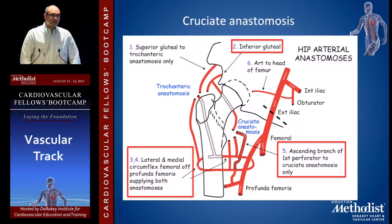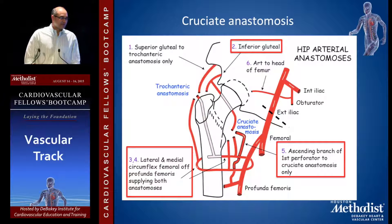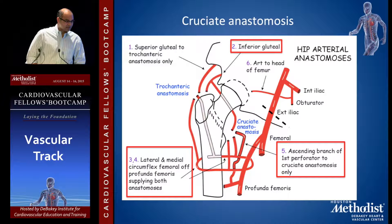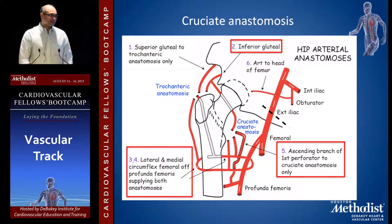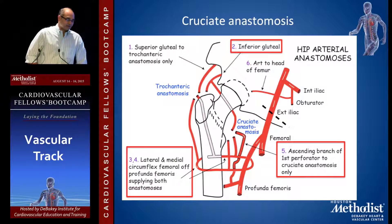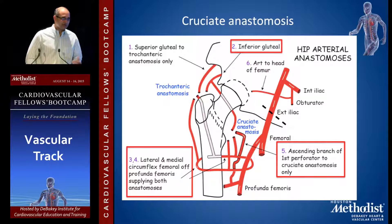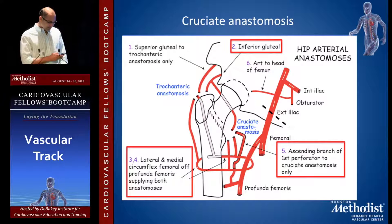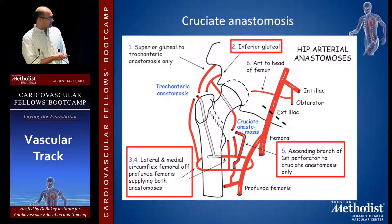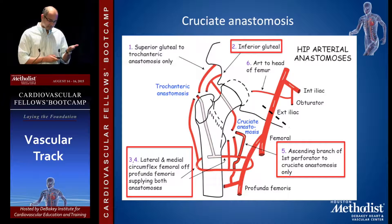The second important pathway is the cruciate anastomosis. When the external iliac or the common femoral goes away, this is what takes care of the profunda, and then the profunda gives collaterals down to the leg. It involves the inferior gluteal, the ascending branch of the first perforator going up from the profunda, and the lateral and medial circumflex femoral arteries. They come into the profunda femoris and supply the lower extremity.